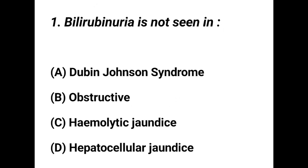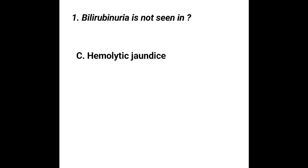Question number 1. Bilirubinuria is not seen in: Option A - Dubin-Johnson syndrome, Option B - Obstructive jaundice, Option C - Hemolytic jaundice, Option D - Hepatocellular jaundice. The correct answer is Option C, Hemolytic jaundice. Bilirubinuria is not seen in hemolytic jaundice.